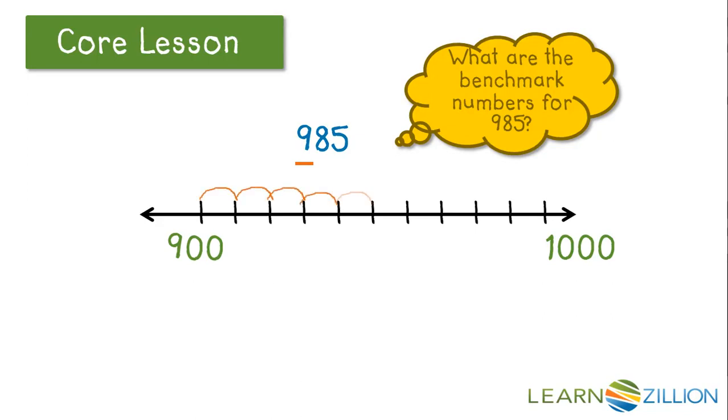We'll count by 10's to locate 985 on the number line—10, 20, 30, 40, 50, 60, 70, 80. 985 would be right about here.